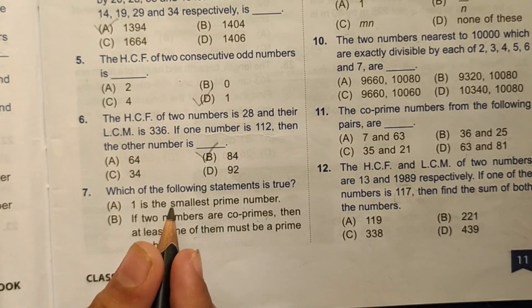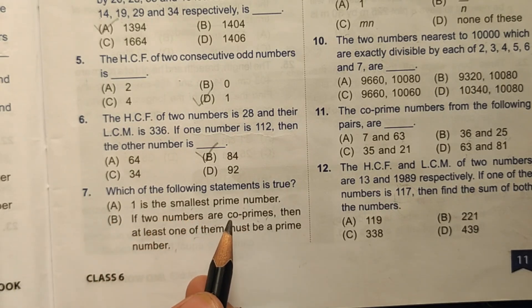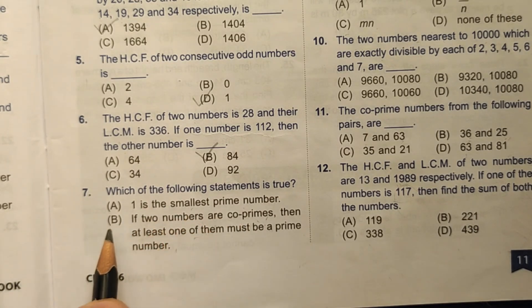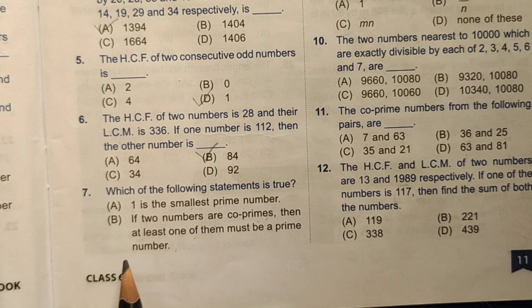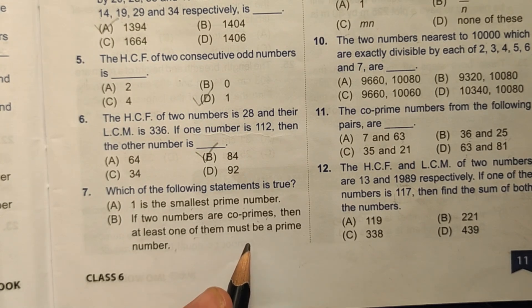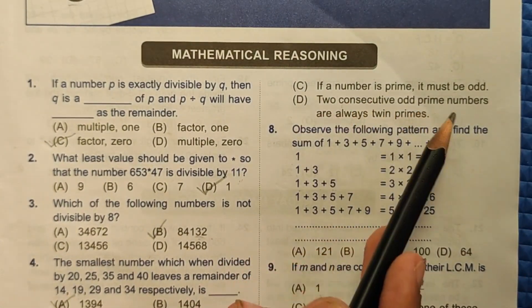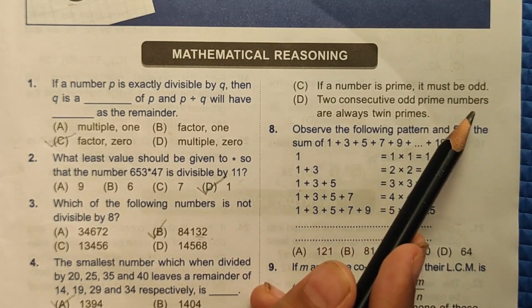Seventh question: which of the following statements is true? Statement A: one is the smallest prime number — this is incorrect because 1 is neither composite nor prime. Statement B: if two numbers are co-primes, then at least one of them must be a prime number — this is again incorrect. Statement C: if a number is prime, it must be odd — this is incorrect because 2 is a prime number and it is even.